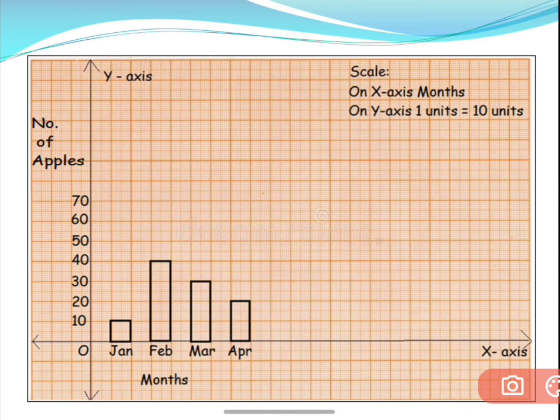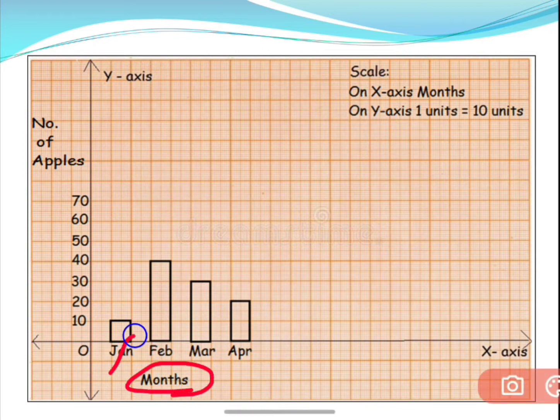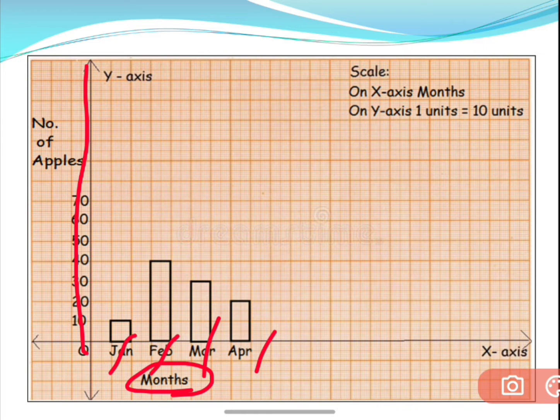Now if you look at the table children, from the pictograph they have given, you have months and number of apples. So months you have to take on the x-axis — January, February, March, April. On the y-axis, you have to take the number of apples sold. So that is your naming of the x-axis and y-axis.